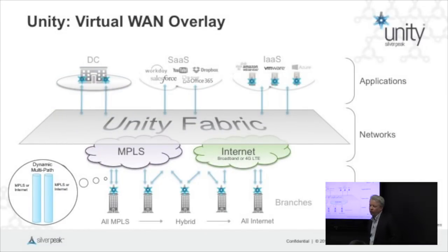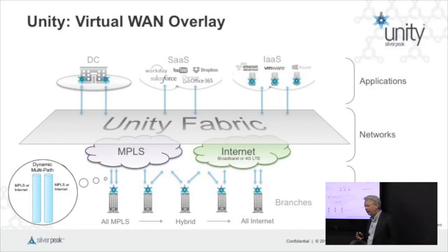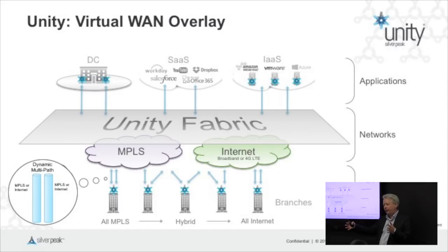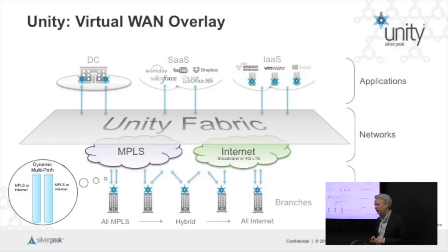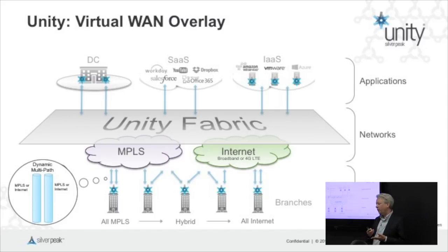Last year we introduced what we call Unity. Unity is our SD-WAN or virtual WAN overlay. If you rewind back to Silver Peak release one, around 2005, even back then we were an overlay — an overlay of GRE or UDP or IPSec tunnels. That's relatively unique in the WAN optimization space; most of the other players focus on being a TCP proxy and built on top of that.